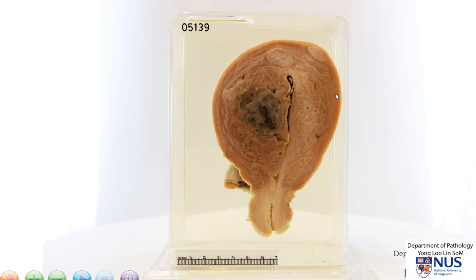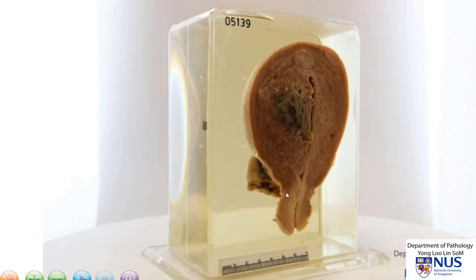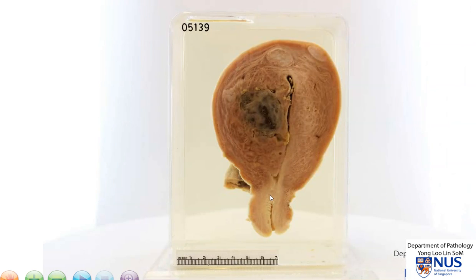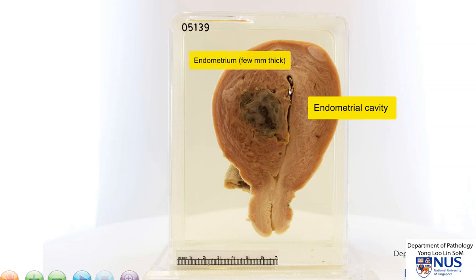This is a pathology specimen showing a bisected uterus, bisected longitudinally in the sagittal plane. What we're looking at on this surface is the endometrial cavity, the endometrium, the myometrium which is thickened, and this is the uterine cervix.